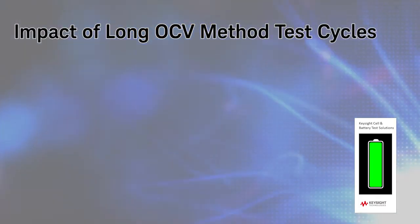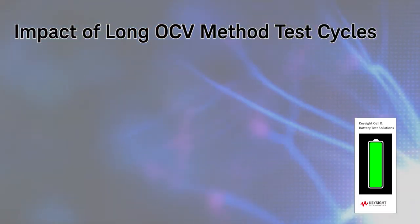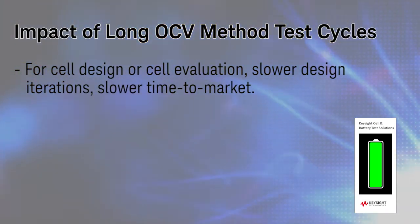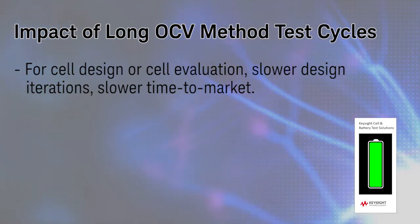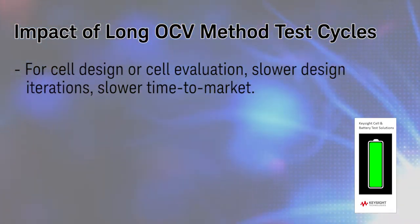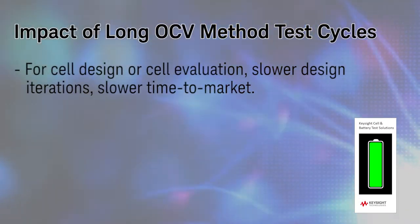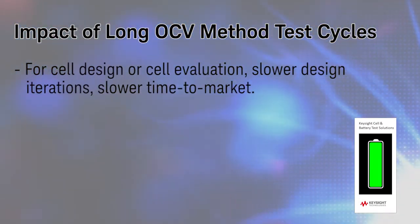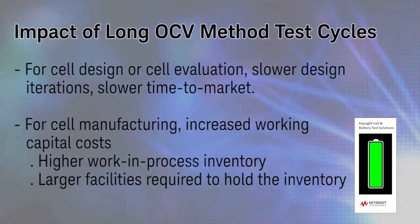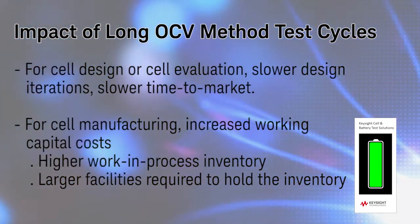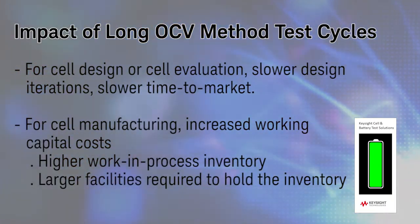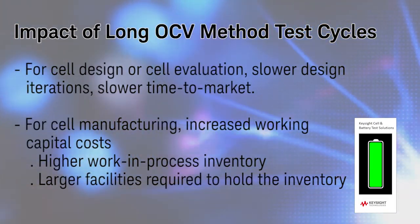This long test time has some significant implications. If you're measuring self-discharge this way as part of the cell design process, or if you're testing cells to evaluate them for use in your electronic equipment design, the long test cycles lengthen your design iterations, which impacts your time to market. If you're measuring self-discharge via the OCV method in cell manufacturing, the long test cycles directly increase the amount of work-in-process inventory and the facility space for that inventory.